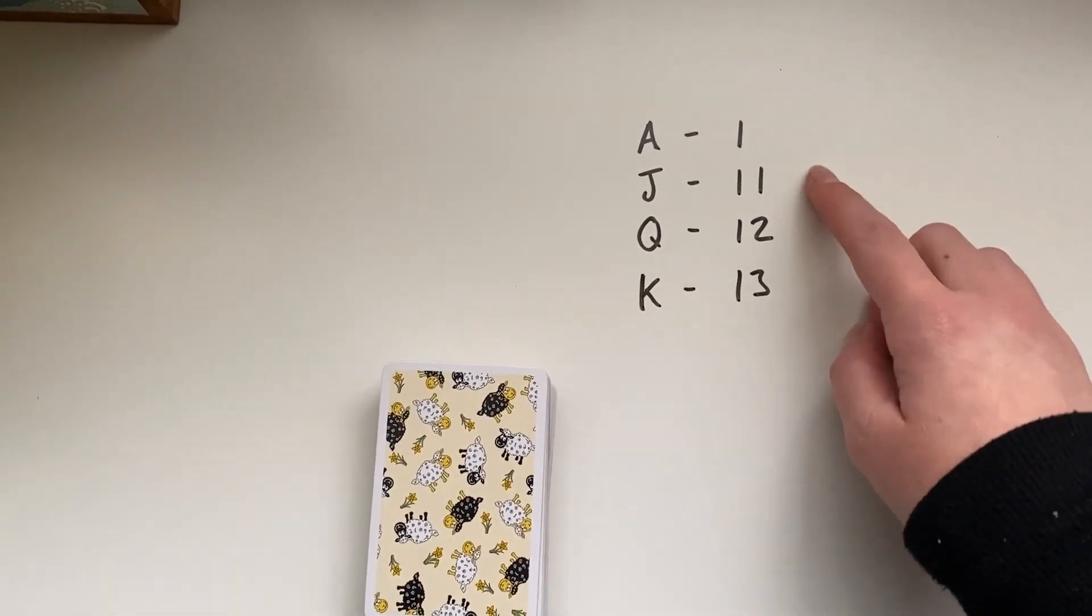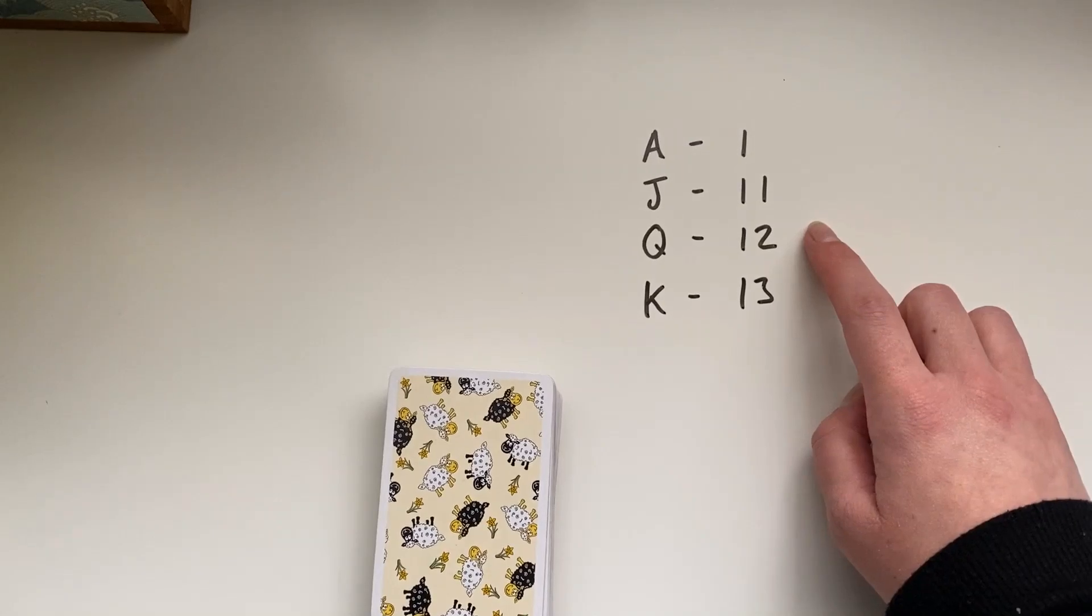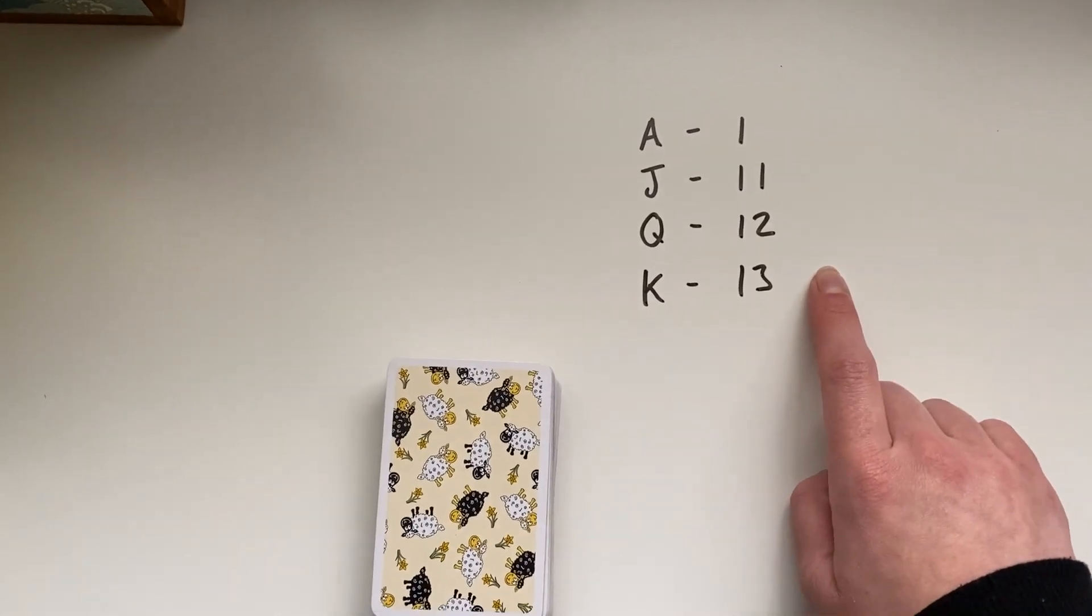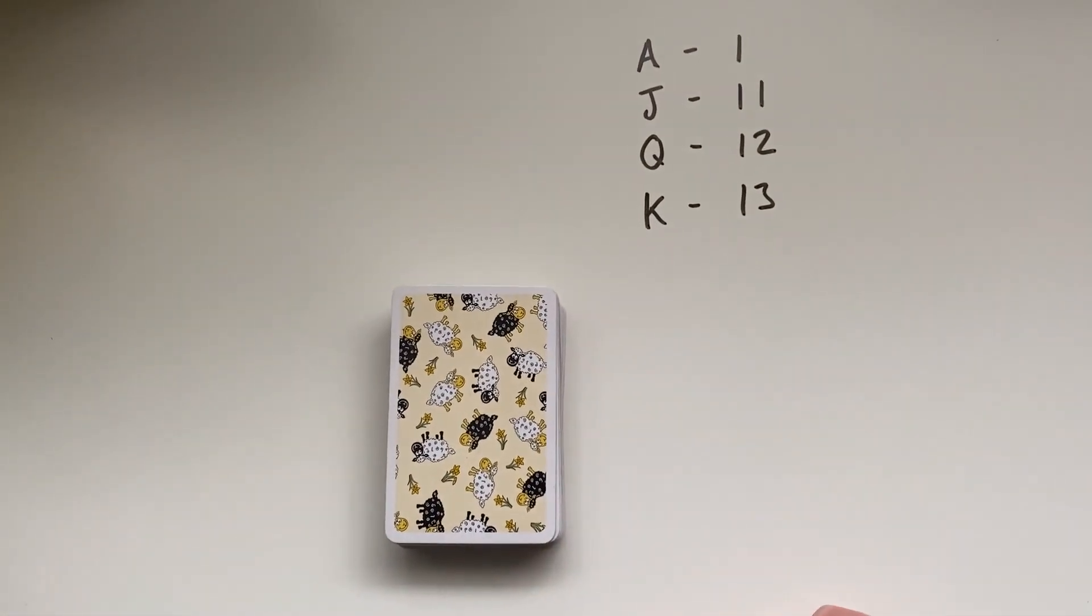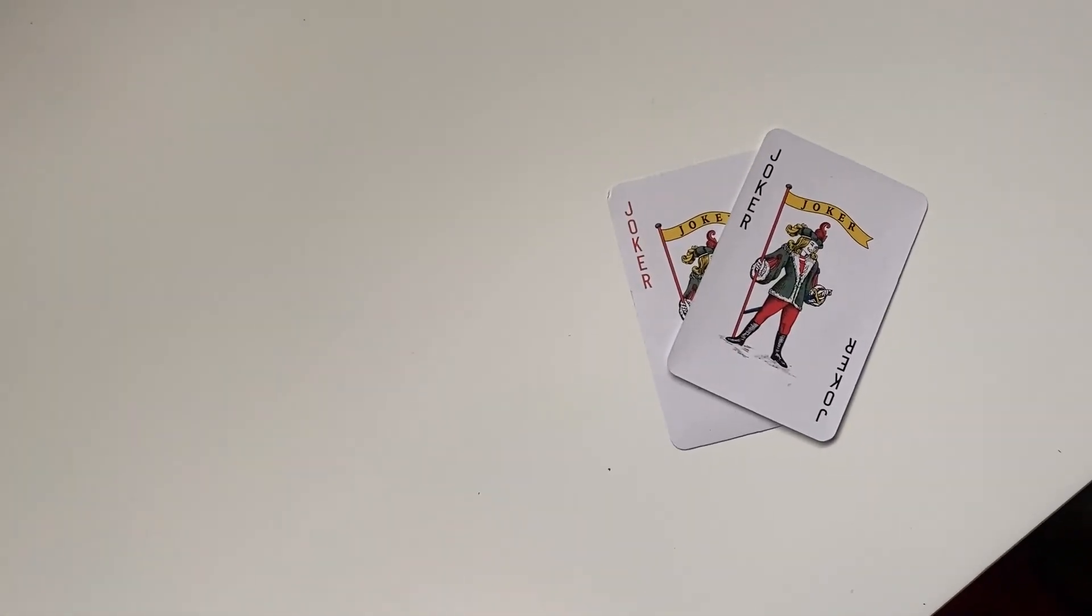So an ace is a 1, a jack is an 11, a queen is a 12, and a king is a 13. Now earlier on I've shuffled this pack of cards and I took out the two jokers, which are just there.